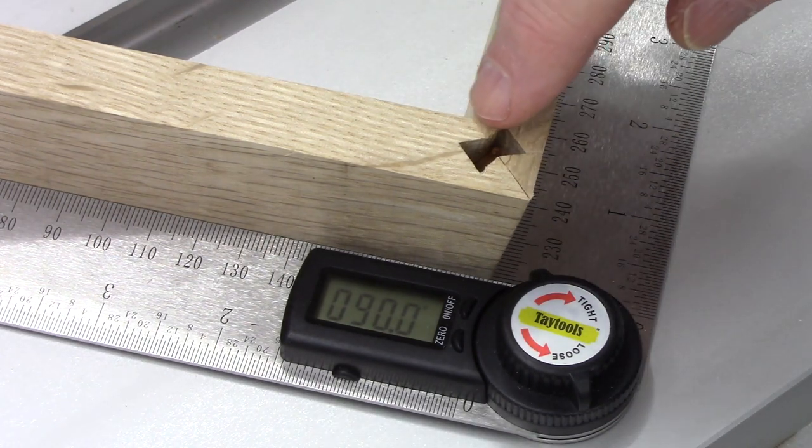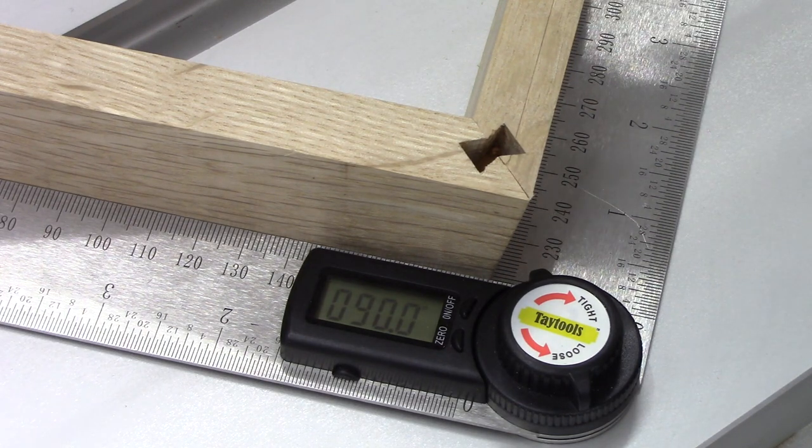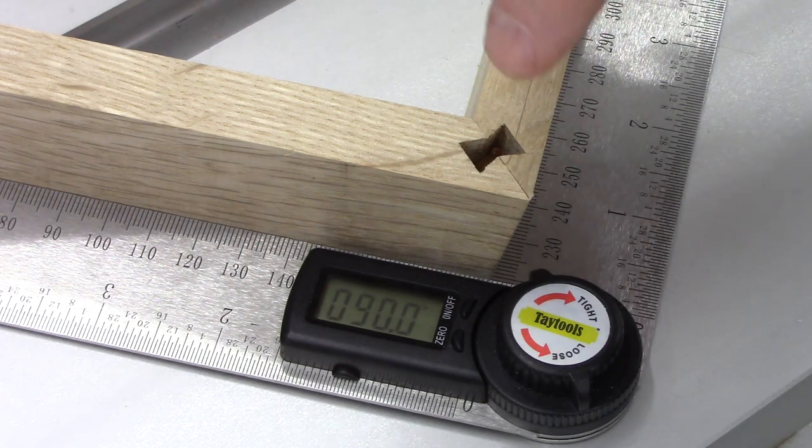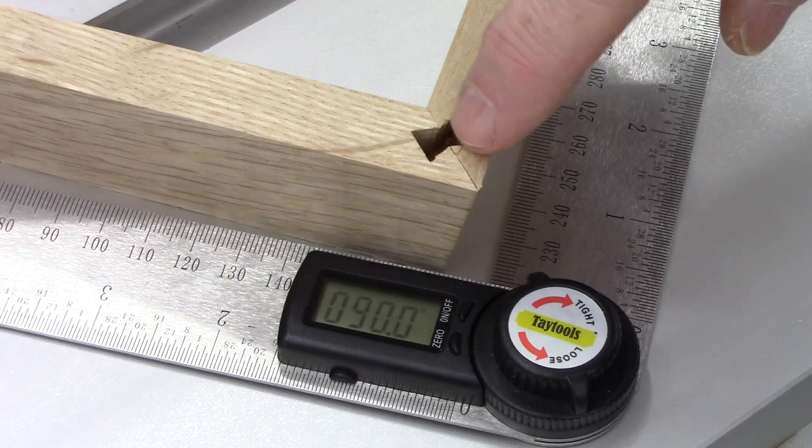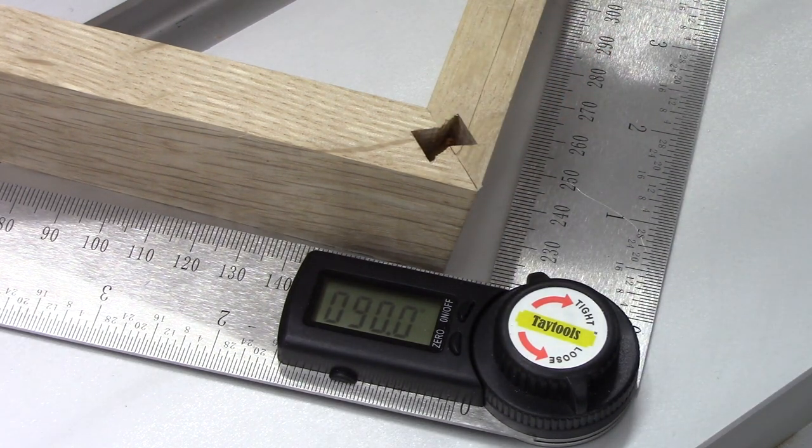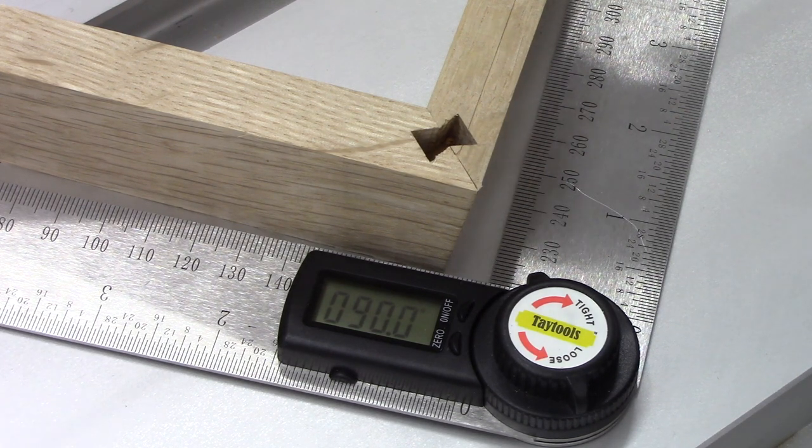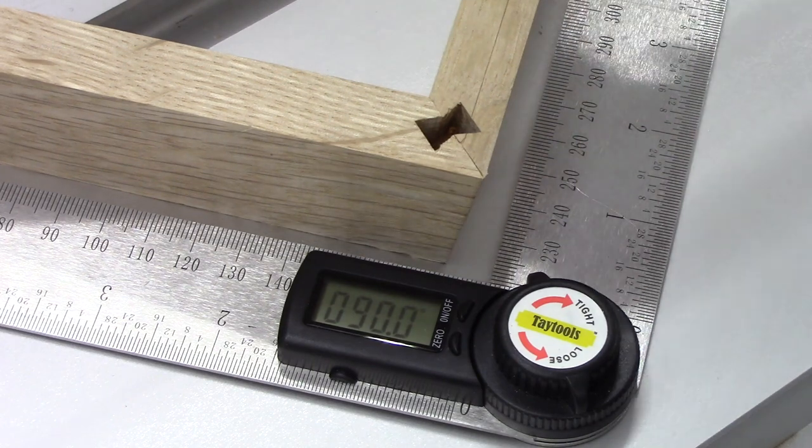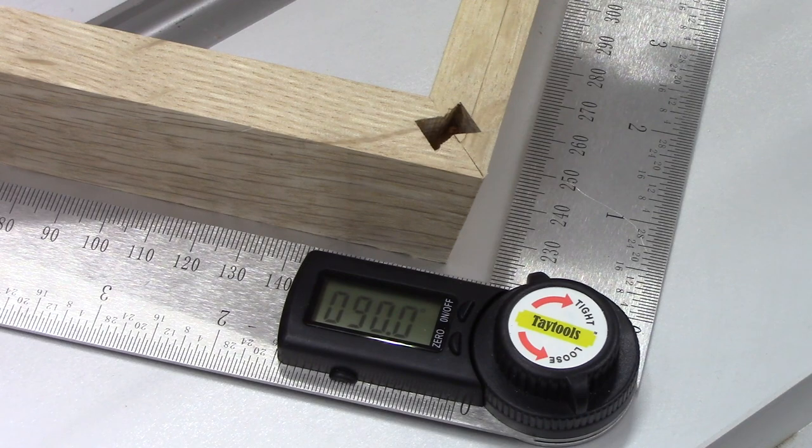That's my explanation or attempt at an explanation of setting angles for making compound miter joints. I hope this has been helpful to you. If you got any questions or comments, post them below. If you are interested in seeing a video on making these dovetail slots on a machine that wasn't designed for compound joinery, let me know and if there's enough interest I'll make a video on that. Have a great day and we'll catch you on the next one. Thanks for watching.